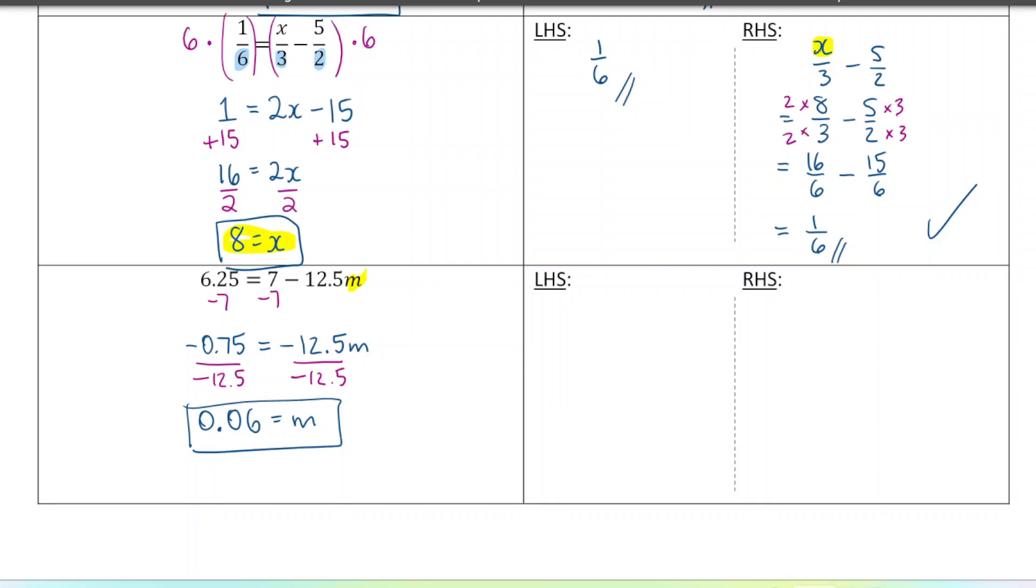Let's check. Again, you can pause the video here if you want to try this on your own. So I'm going to substitute what I think is the answer for m, which is 0.06. So negative 12.5 times 0.06 is negative 0.75, and 7 minus 0.75 is 6.25. So I have verified that the left-hand side and the right-hand side are equal to each other, so we're good to go.